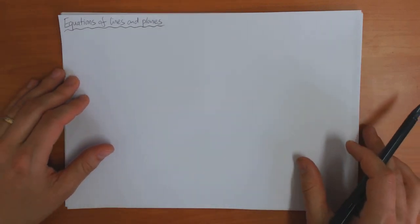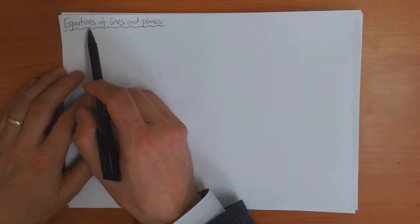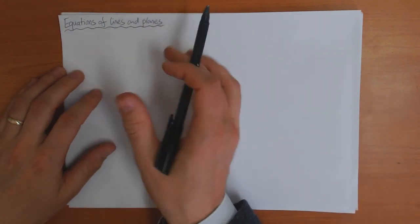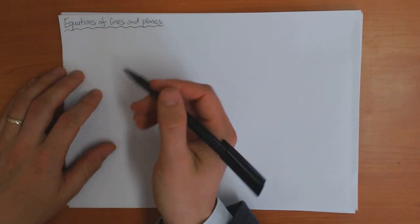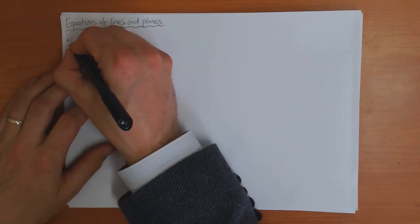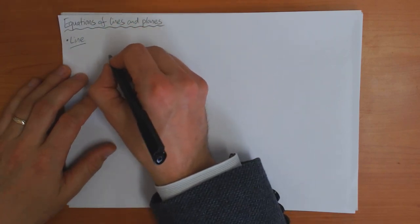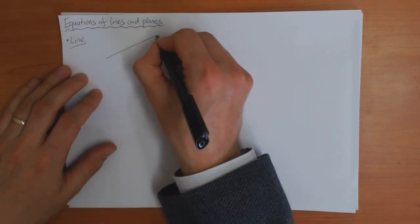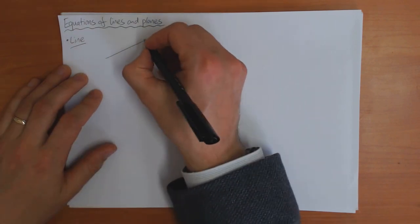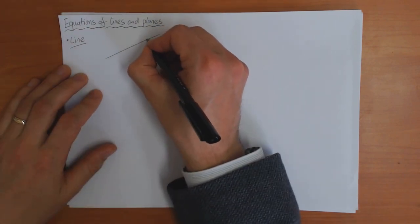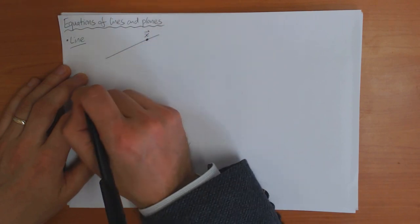In this video I'm going to show you how you can use vectors to define the equations of lines and planes — some simple geometrical objects. I'll start with the equation of a line. How can I write an equation for this? This means how can I write an equation which is satisfied by any point x on the line?